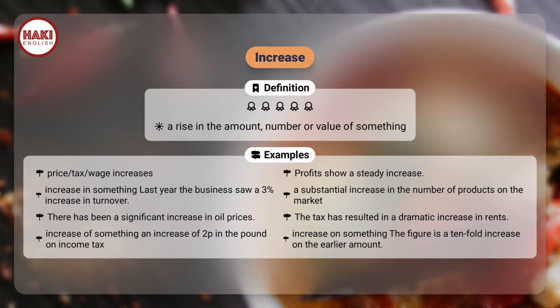The tax has resulted in a dramatic increase in rents. Increase of something — an increase of 2p in the pound on income tax.